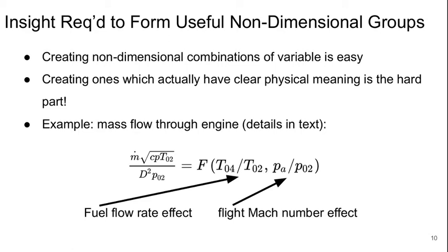So here's an example of a mass flow parameter through the engine. Now the details of how this is derived is in the text. But we see it's the mass flow rate times the square root of Cp, the specific heat, times T0.2 over D squared, the engine diameter squared, and P0.2. And this will be a function of T0.4 over T0.2, which is the turbine inlet temperature to compressor inlet temperature ratio, and Pa over P0.2. So one of these is the effect of the fuel flow rate and the other is the effect of flight Mach number.